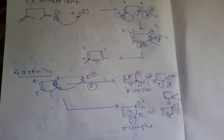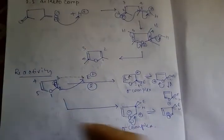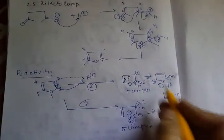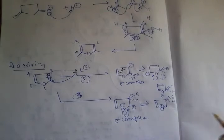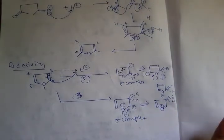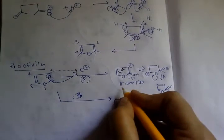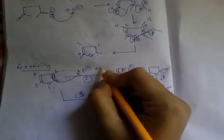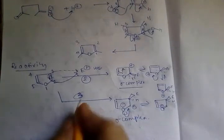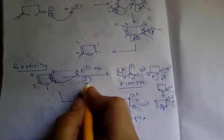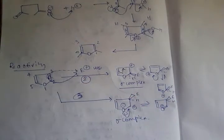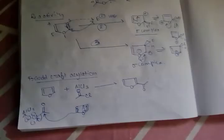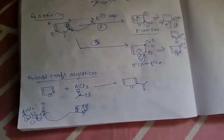If electrophilic substitution occurs via the two position, three resonating structures can form. But if it occurs via the three position, only two resonating structures are produced. More resonating structures means more stability, so due to greater stability of the sigma complex, electrophilic substitution in furan will preferentially occur at the C2 position.